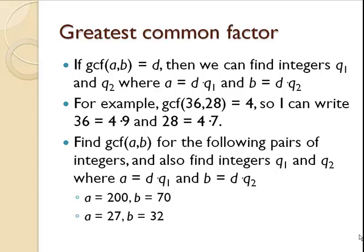In this example with 36 and 28, 36 is 4 times 9, 28 is 4 times 7. I'd like for you to find q1 and q2 and the greatest common factor for these pairs of integers below. You can pause it here and come up with the answers.